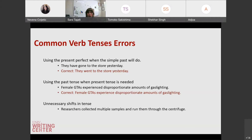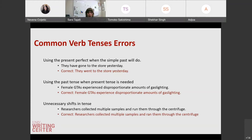Another common error we see is unnecessary shifts in tense. For example, 'researchers collected multiple samples and run them through the centrifuge.' We have the past tense 'collected' and then a shift to the present tense 'run,' when both of these should be in the past tense because these actions have already been completed — they collected them and then they ran them. So watch out for these shifts in tense, as this might affect how people process your work. Keep these in mind as you go through and do your revisions. Feel free to speak up, stop me at any time, or put questions in the chat.